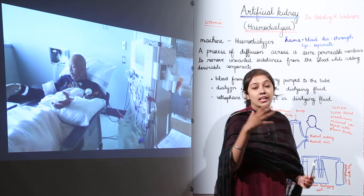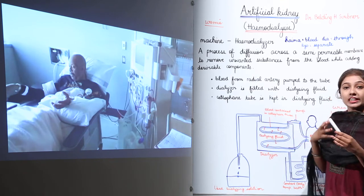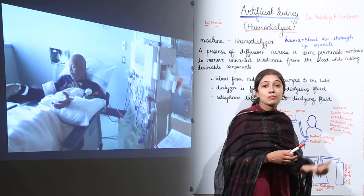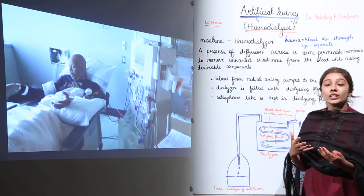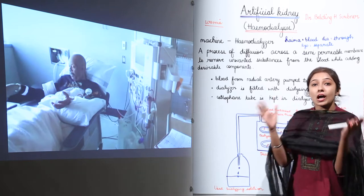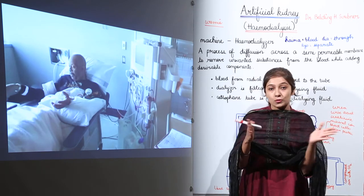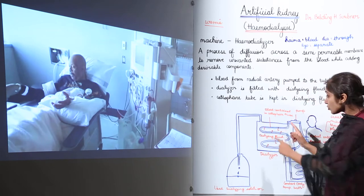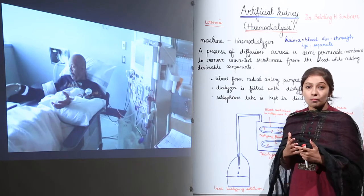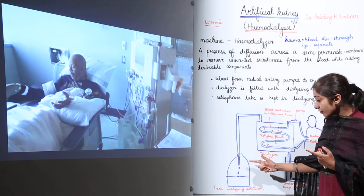A pump pushes this blood into the cellophane tube. Inside the cellophane tube, the blood contains both toxic components — urea, uric acid, creatinine, and mineral ions — as well as blood cells and plasma proteins. The cellophane tube is impermeable to blood cells and plasma proteins, so they do not diffuse out. Only the smaller molecules — urea, uric acid, creatinine, and mineral ions — diffuse out into the dialyzing fluid surrounding the tube in the chamber.